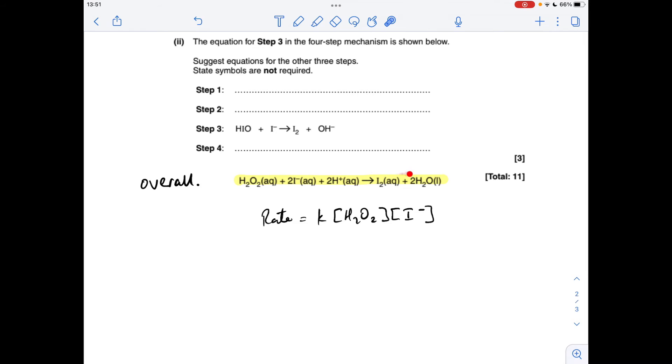So I've just copied and pasted the overall equation. I've just written out the rate equation again to save me going backwards and forwards. So the first thing to say is that the rate equation, the species in the rate equation, tell us what's involved in the rate determining step. And it says that the slowest step is step one. So we must have those species as the reactants of step one, the rate determining step.